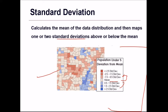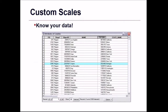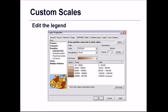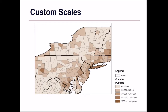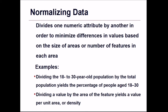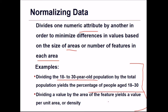Standard deviation should only be used when the data approximates a normal distribution — a bell-shaped curve. For a custom scale, you need to know your data well because of the variety of differences. You can edit the legend yourself to create custom scales. You can also normalize the data by dividing one numeric attribute by another to minimize differences based on size of areas or number of features. For example, dividing the 18 to 30 year old population by total population yields the percentage of people in that age group, or dividing by area yields density per unit area.